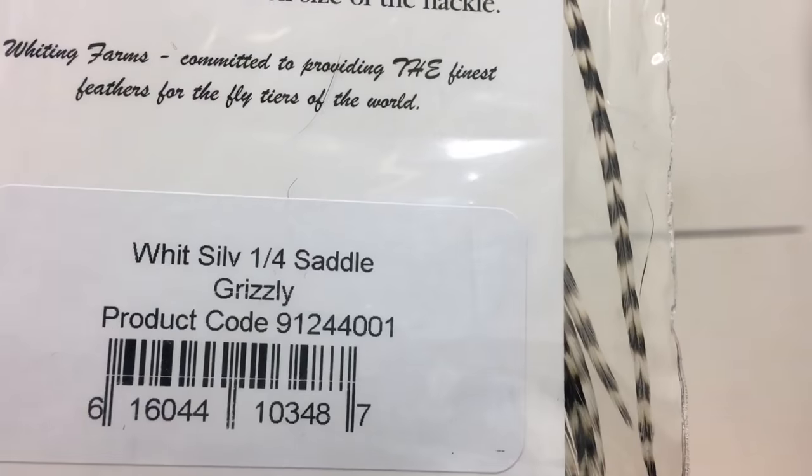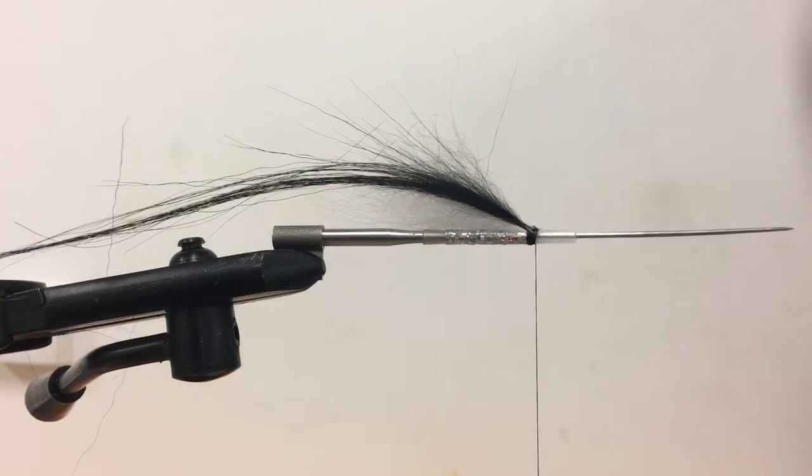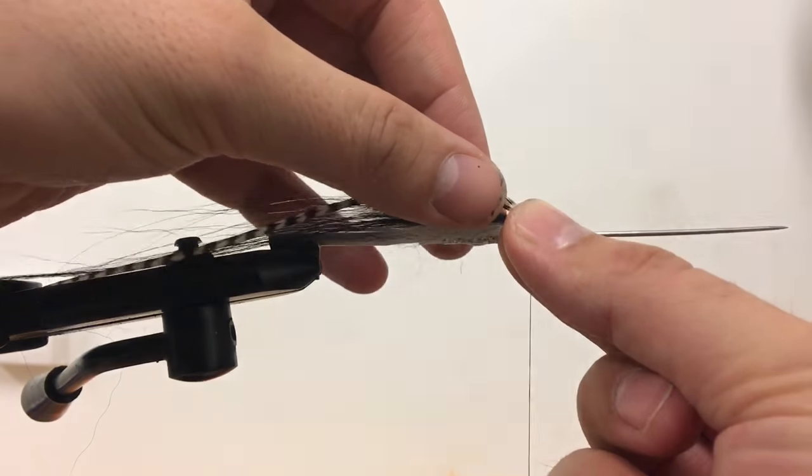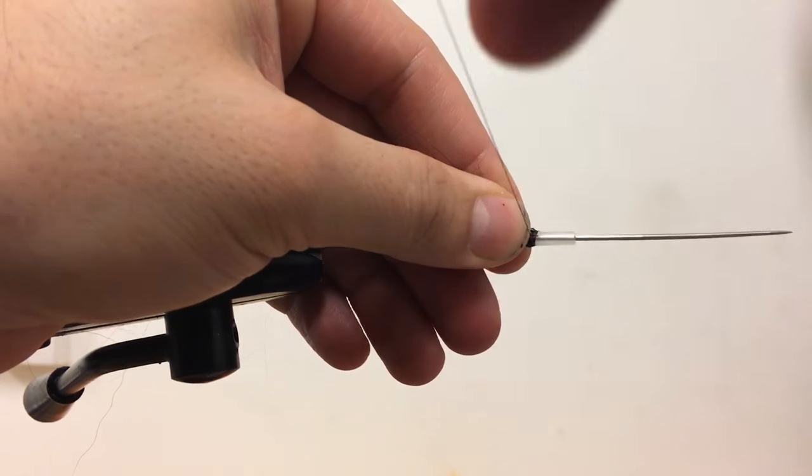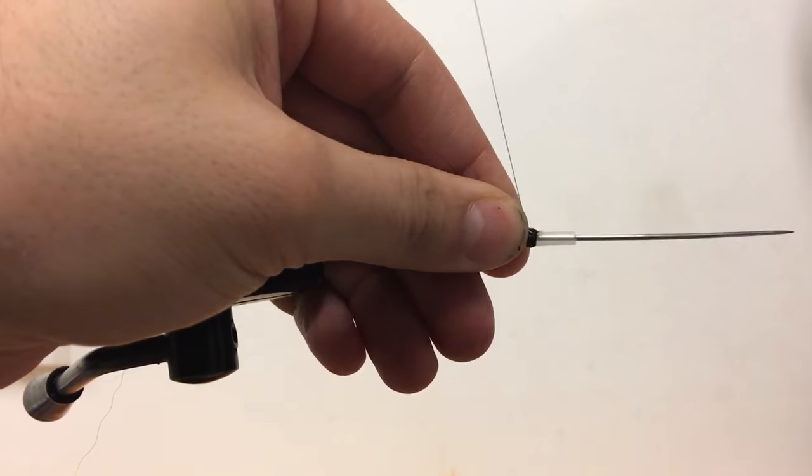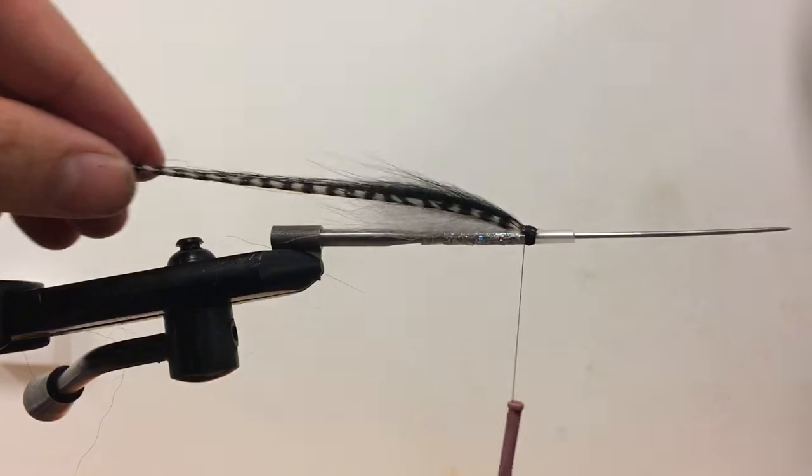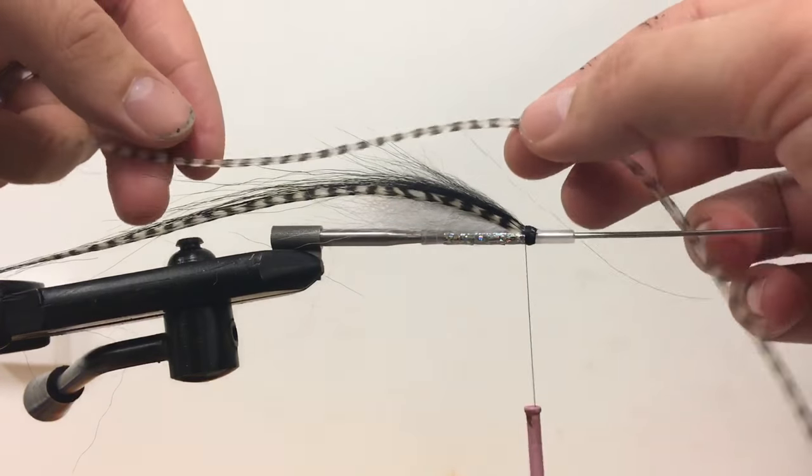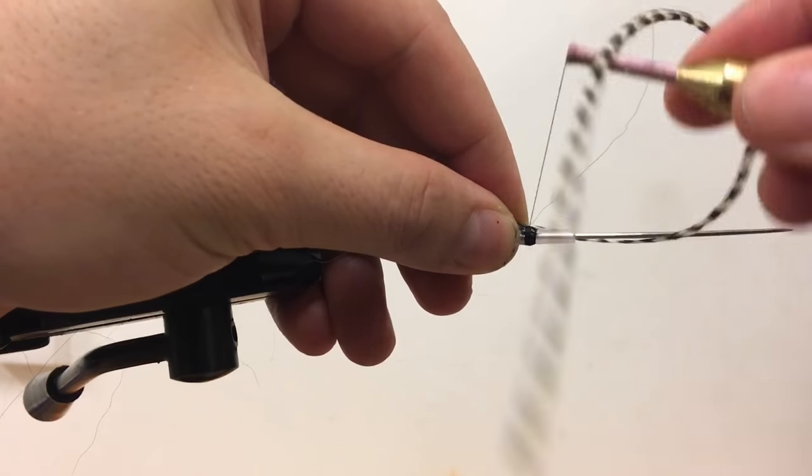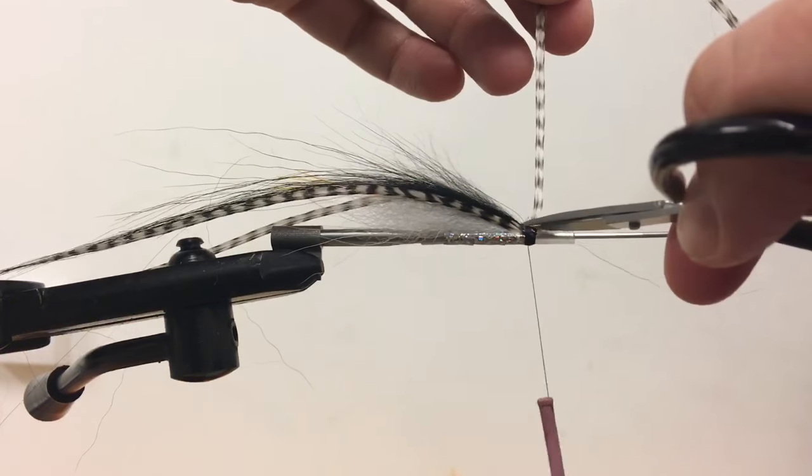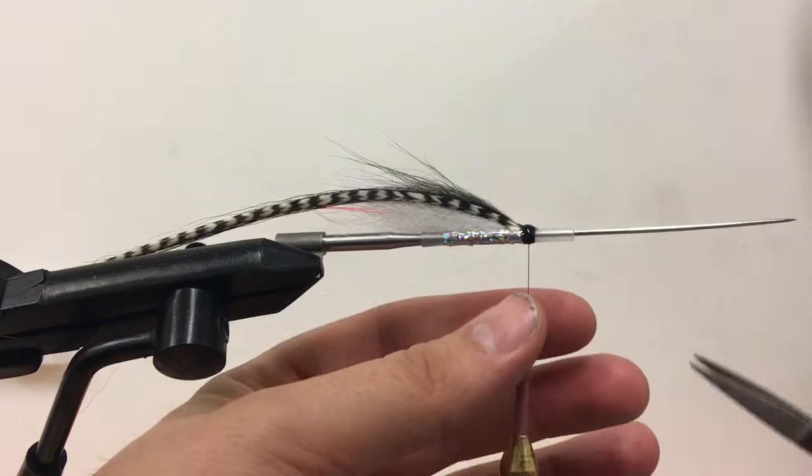Then we make side feathers using whitening grizzly feather. We put one feather on each side. We get nice natural coloring on both sides, which makes the fly look even more natural. Then we add a tiny drop of super glue and cut the thread out.